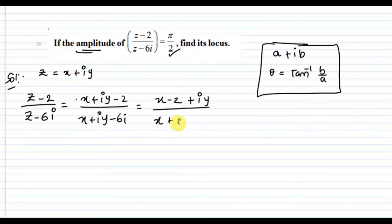In the denominator, we have x + i, so we can take i common. Then it becomes y minus 6. We need to rationalize because the denominator has complex numbers.